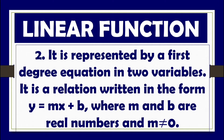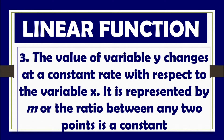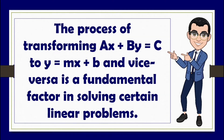Second, it is represented by a first degree equation in two variables, written in the form y equals mx plus b, where m and b are real numbers and m is not equal to zero. Third, the value of variable y changes at a constant rate with respect to variable x, represented by m — the ratio between any two points is a constant.